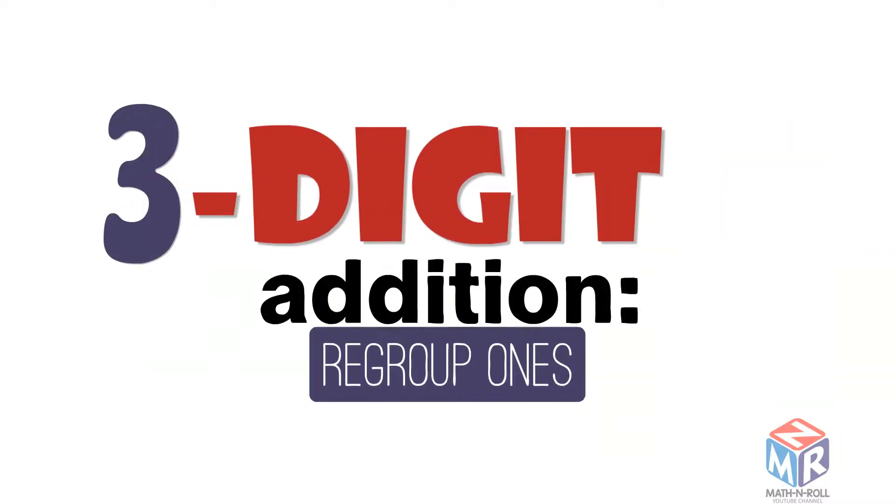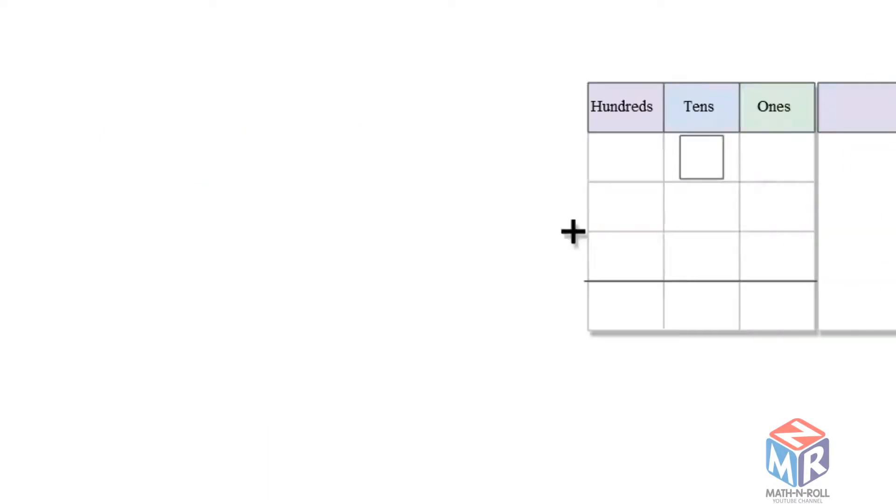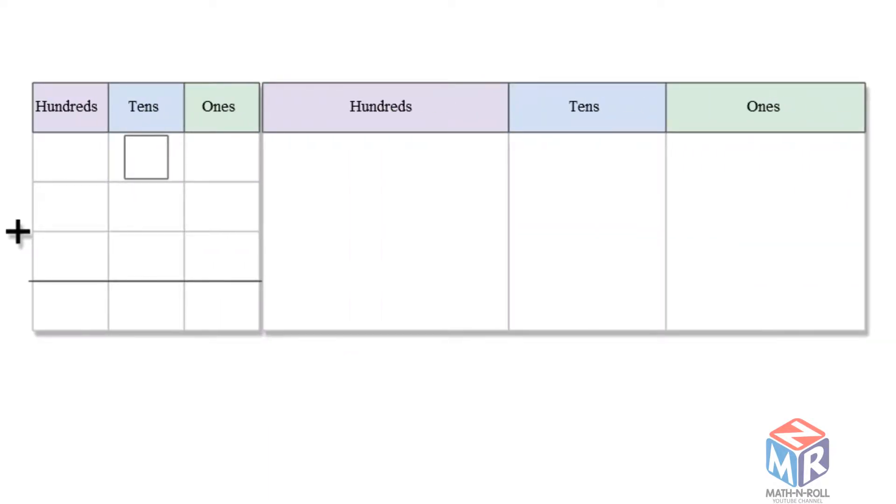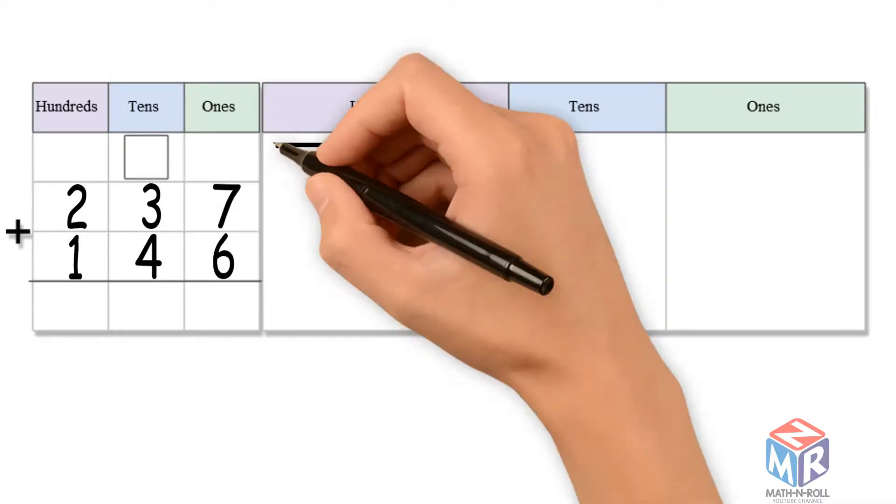3-digit addition, regrouped ones. Let's try an example, 237 plus 146, let's draw it.